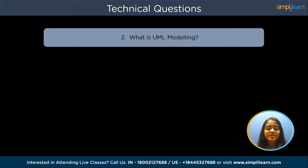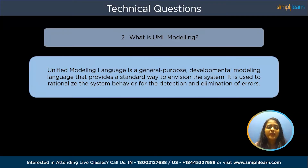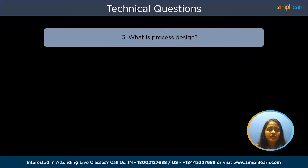Next is: what is UML modeling? UML, or Unified Modeling Language, is a general-purpose developmental modeling language that provides a standard way to envision the system. It is used to rationalize the system behavior for the detection and elimination of errors.